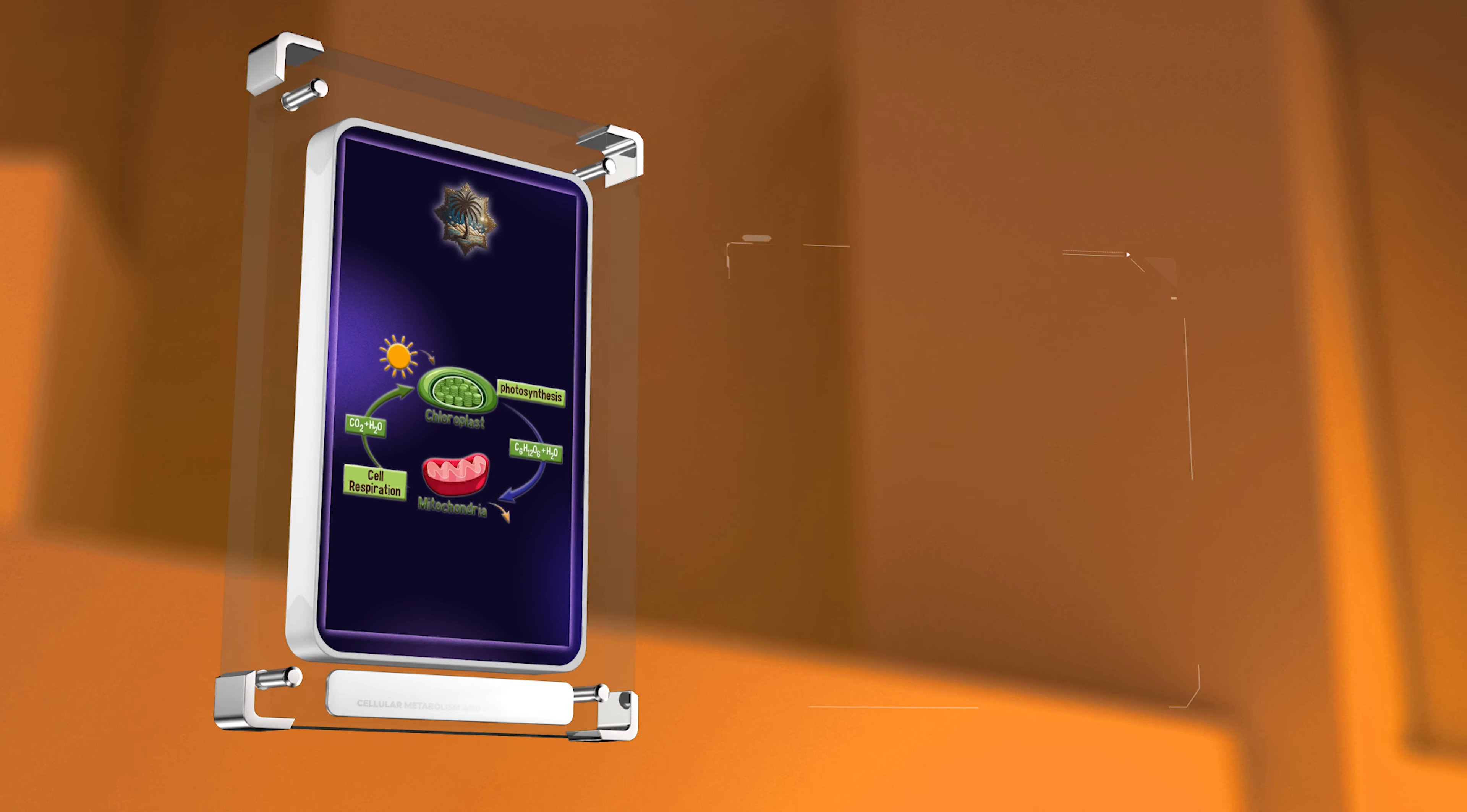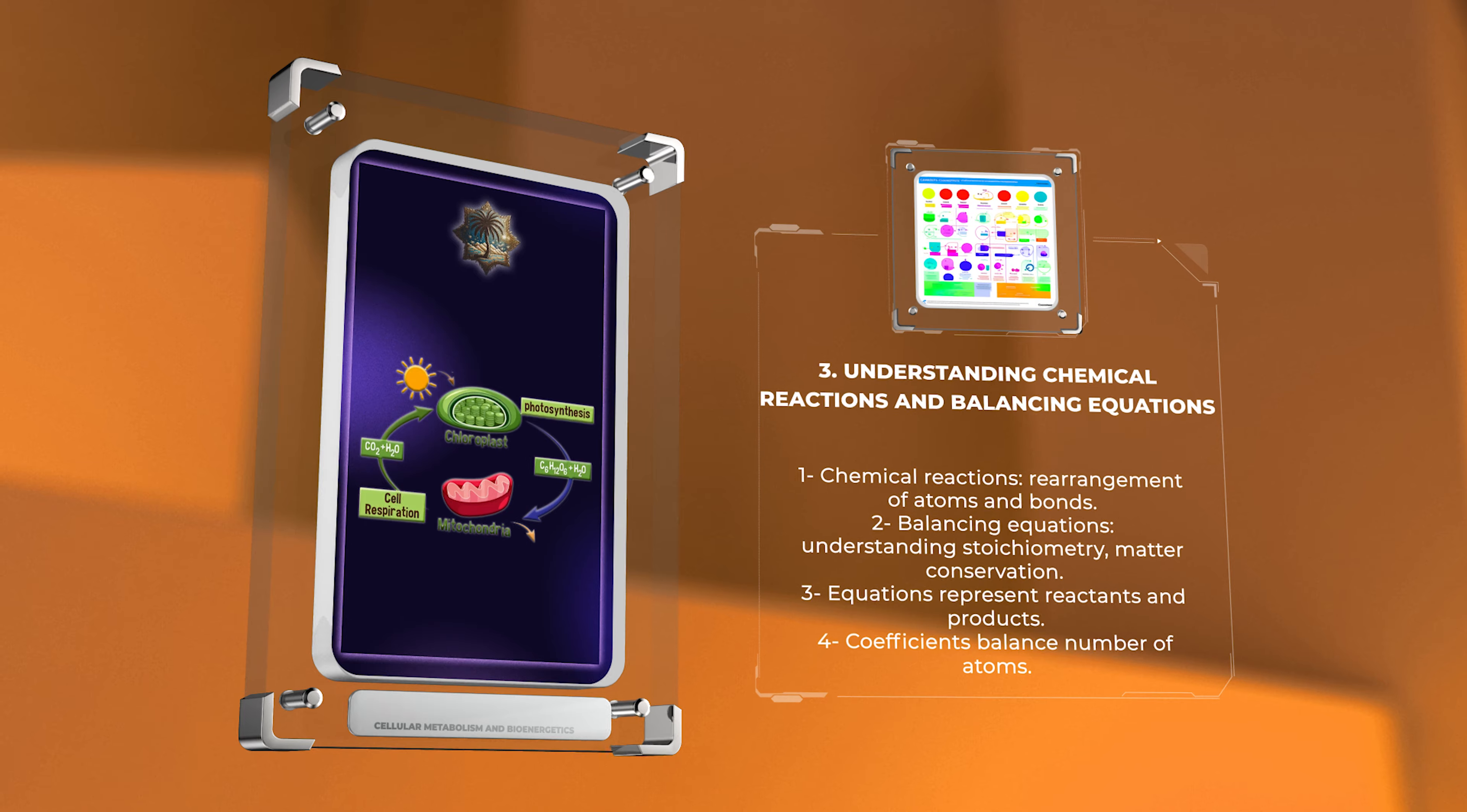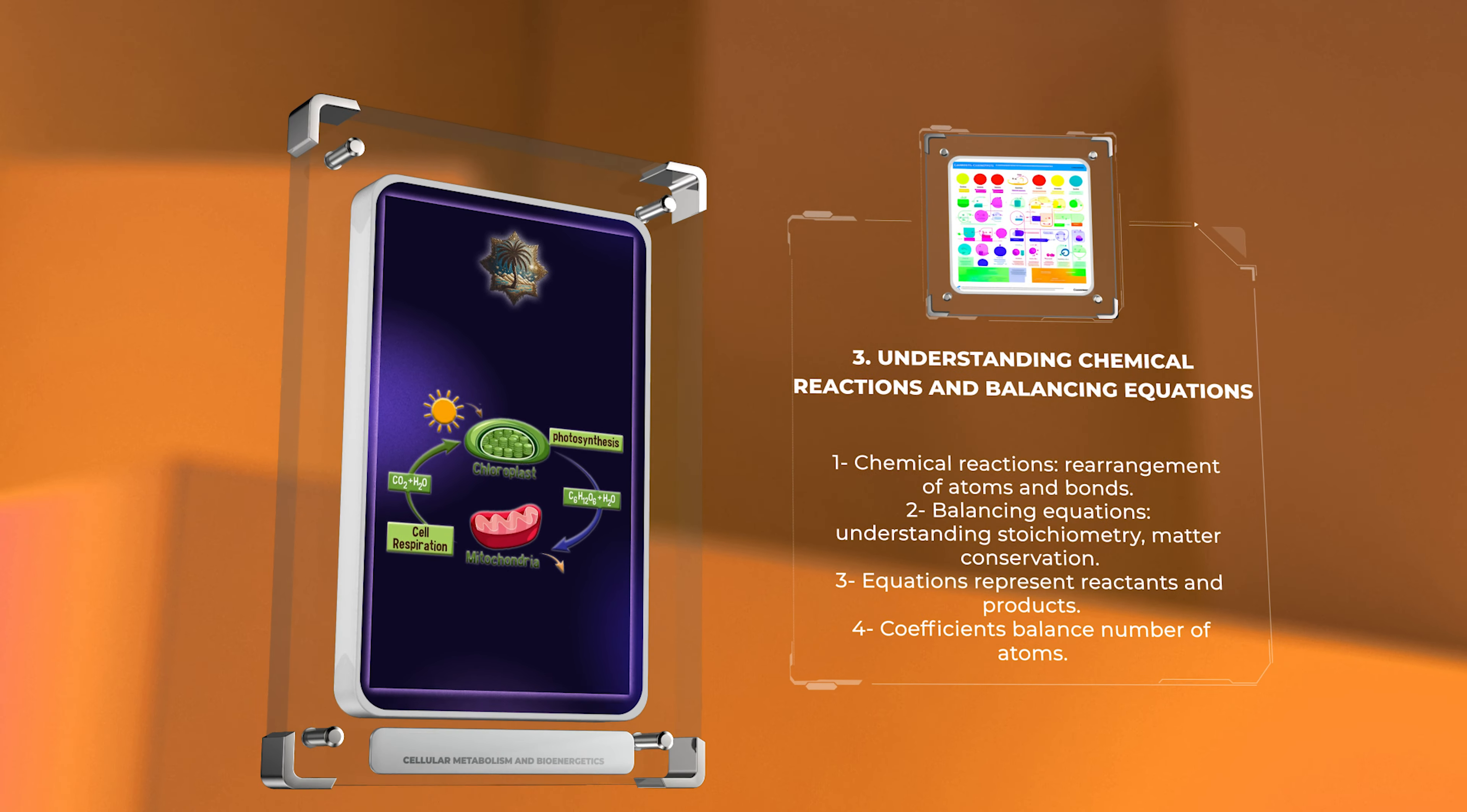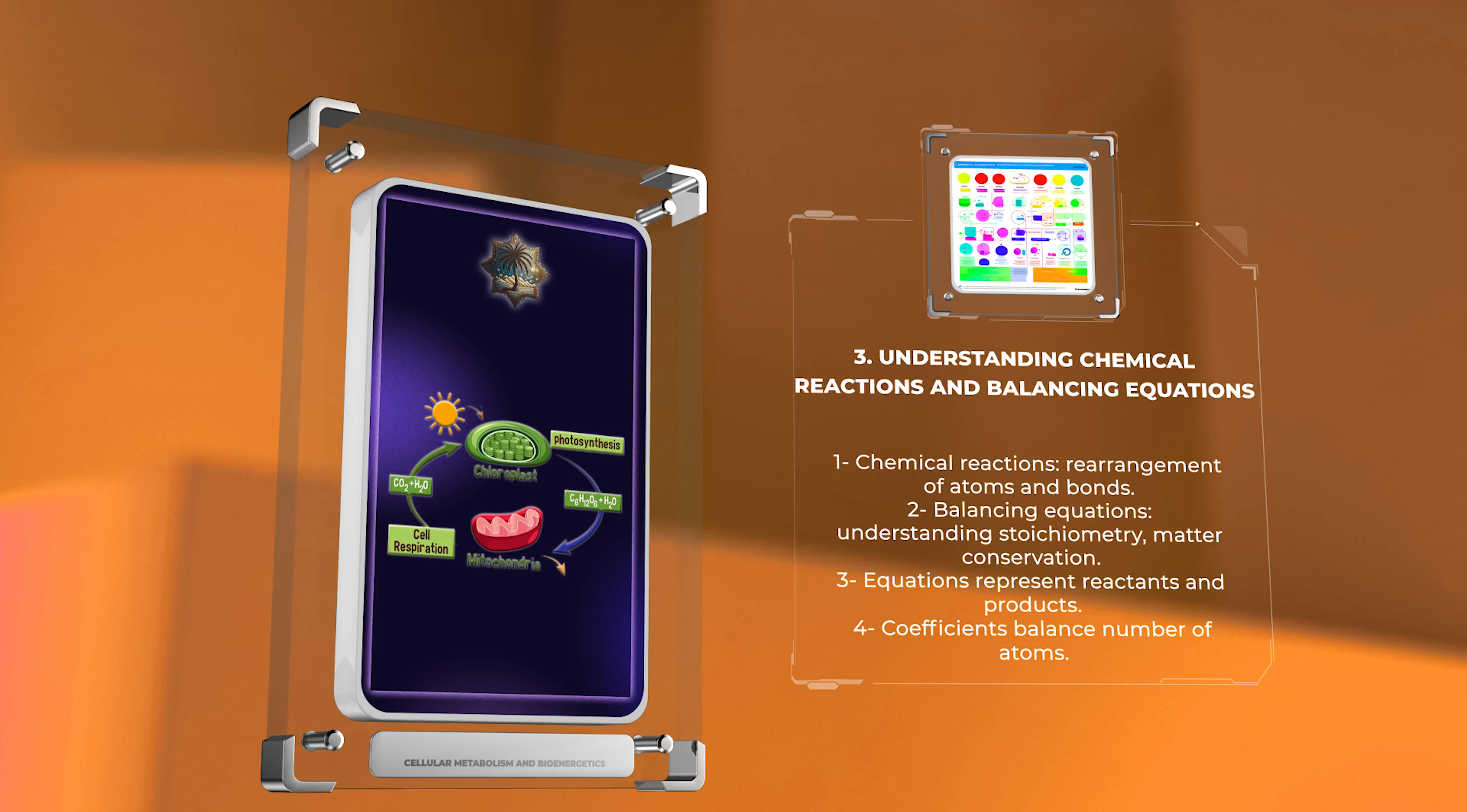Chemical reactions involve the rearrangement of atoms and bonds to form new molecules. Balancing equations is key to understanding the stoichiometry of reactions, ensuring that matter is conserved. Equations represent the reactants and products involved, and coefficients balance the number of atoms on both sides of the equation.